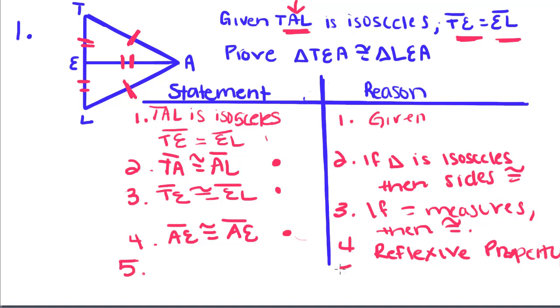We have one last step, which is to say: therefore, triangle TEA is congruent to triangle LEA by side-side-side.